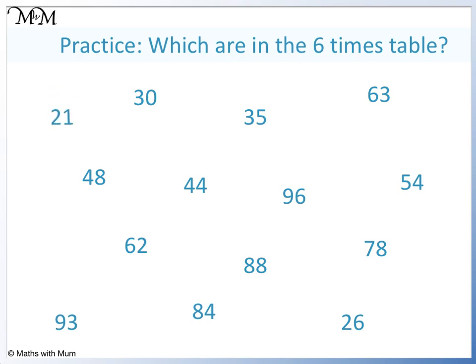21: 2 plus 1 equals 3, so it's a multiple of 3, but it's an odd number. 30: it's even, 3 plus 0 equals 3, which is a multiple of 3, so 30 is a multiple of 6. 35 is odd, so it is not a multiple of 6. And so is 63 — it's also odd.